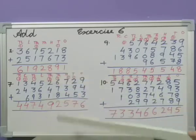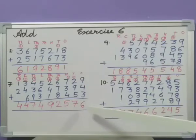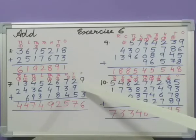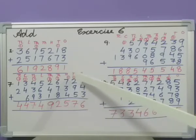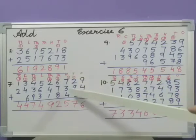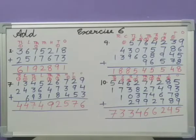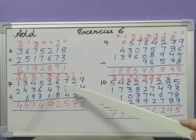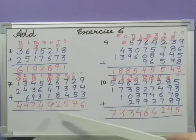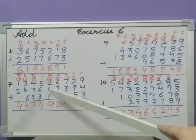9 plus 4 plus 3 is equal to 16, so we will write 6 here and 1 carried over. Then 2 plus 9 plus 5 is 16, plus 1 that is 17, carried over 1. Then 7 plus 3 plus 4 is 14, plus 1 that is 15, again 1 carried over. 6 plus 7 plus 8 that is 21, plus 1 that is 22. Now carried over number will be 2. So 2 plus 2 is 4, plus 4 is 8, plus 1 is 9.